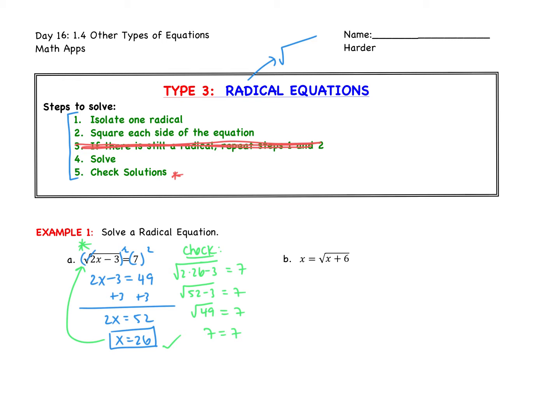Let's do example B, which is going to be a little bit more work. We notice the radical is alone, so we're going to square both sides. On the right side, the square root and the square undo each other, leaving just x plus 6. On the left side, we're left with x squared. This is a quadratic that we know how to solve — we can try to factor it, use the quadratic formula, or complete the square. I'm going to try to factor it.